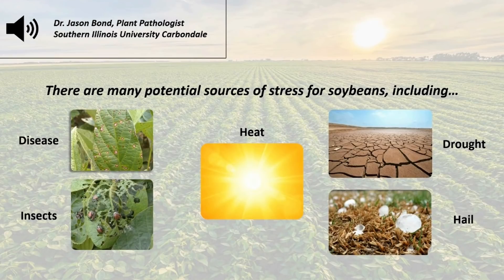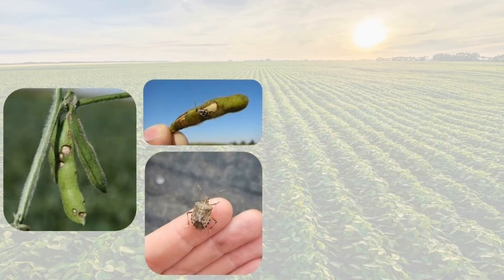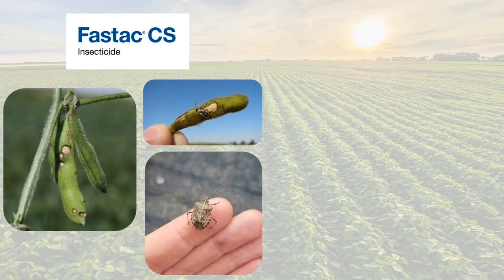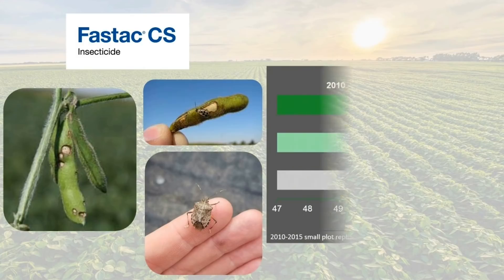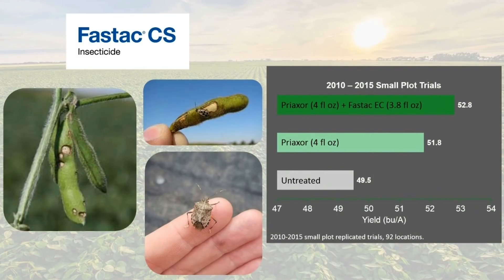Now that we know when to target our fungicide applications, let's talk about a tank mix partner that may bring some added benefits. With pods starting to show up and grain fill on the horizon around the time of application, the soybeans are susceptible to damage and yield loss from insect feeding. Including a foliar insecticide, such as BASF's FASTAC CS, can help prevent this insect feeding from occurring. As you can see from our research trials, Preaxor fungicide alone did provide a yield benefit, but including FASTAC in the tank gave the application an extra boost.